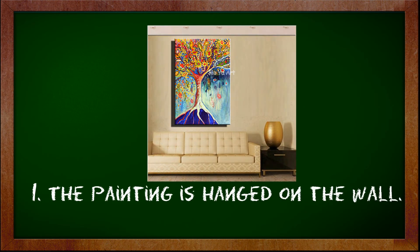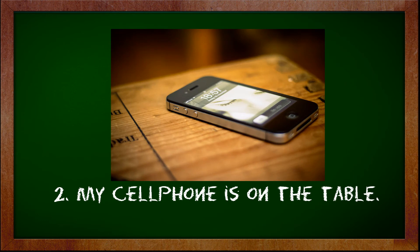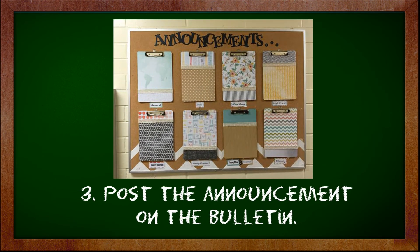Number one. The painting is hanged on the wall. The painting is hanged on the surface of the wall. Number two. My cell phone is on the table. So, when we're referring to a surface, always use on and not in. Number three. Post the announcement on the bulletin. It is on the bulletin and not in the bulletin.